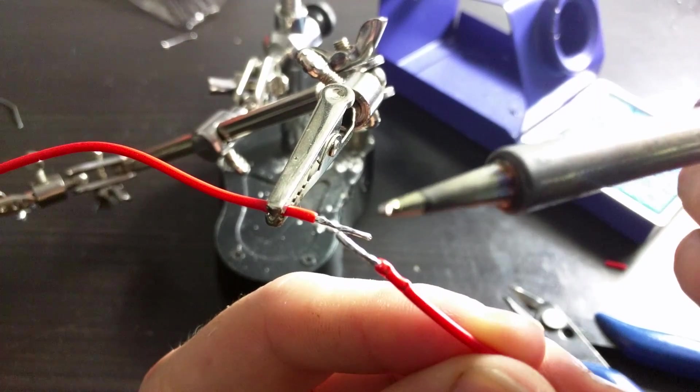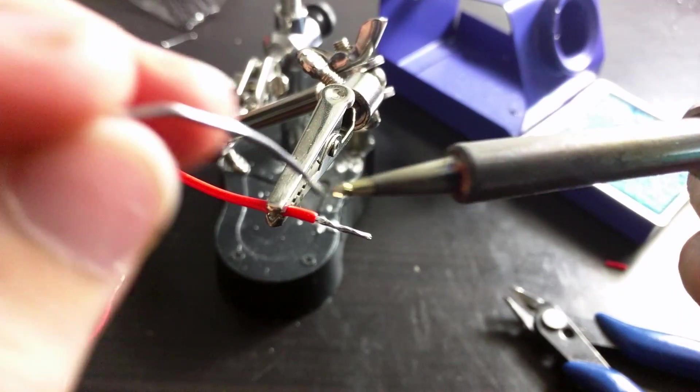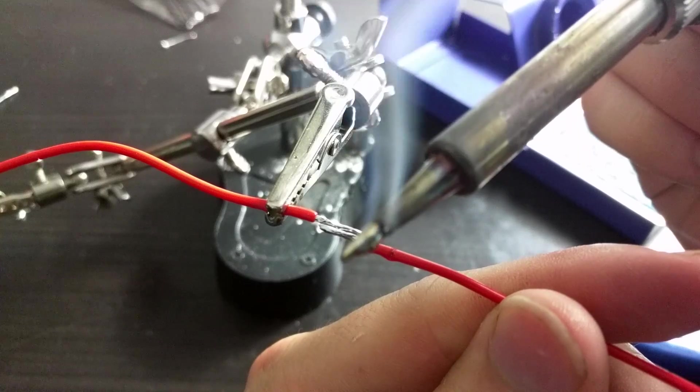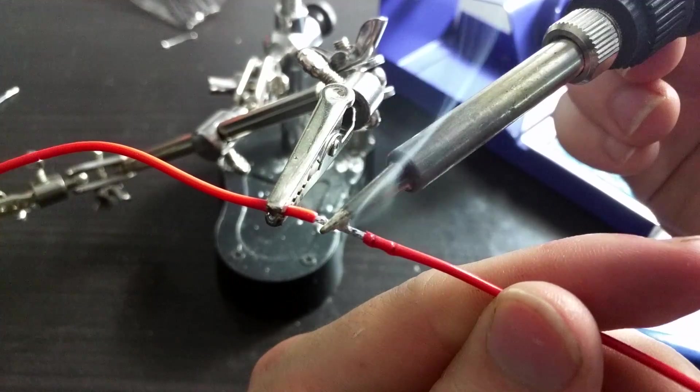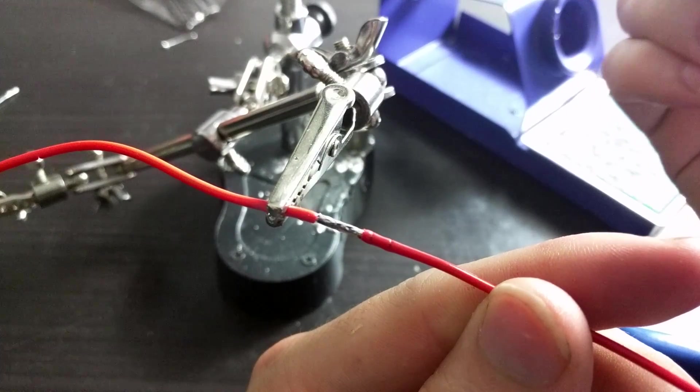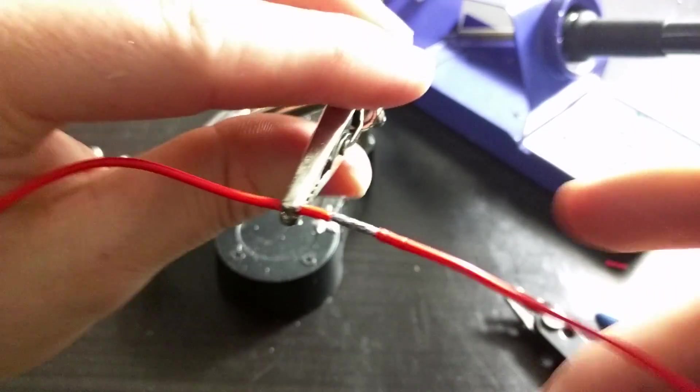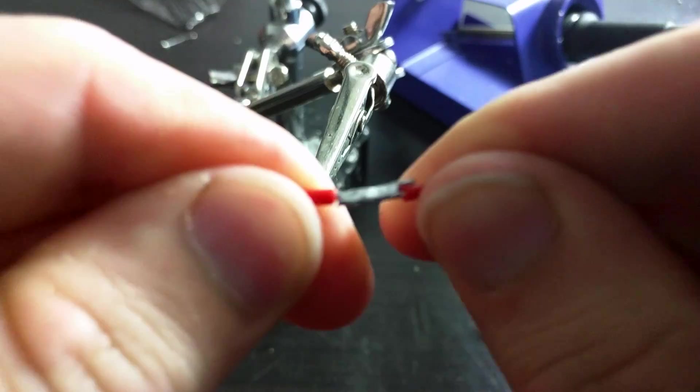So, what I'm going to do is prepare the end of my iron by tinning it, hold the two connections together and apply the iron on top of them. And there we go, we have a perfect join. If I now try to pull these wires, they shouldn't break easily.